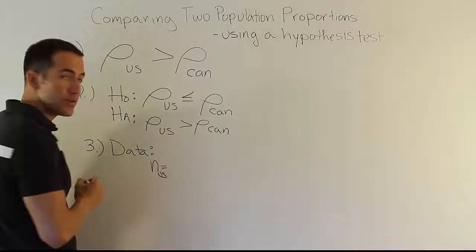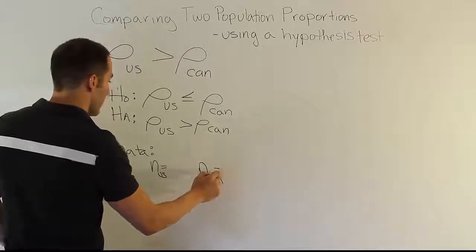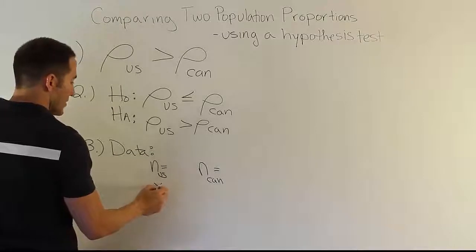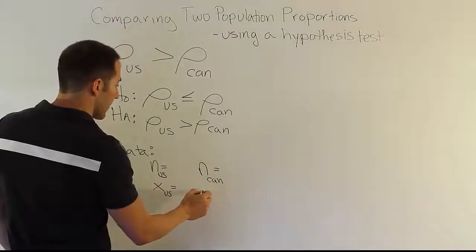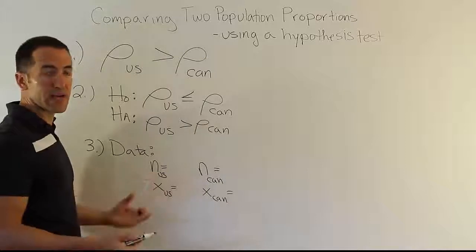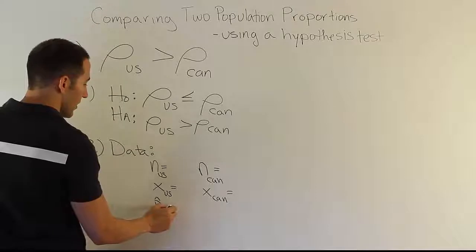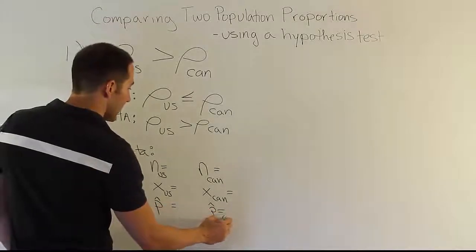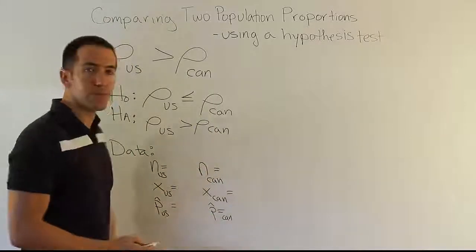We will have for each one, so we'll say a sample size for the US, a sample size derived from Canada. So we look at marriages in each country. Then we would have x, which is the number of marriages, let's say, that ended in divorce for the US out of that total. And then we'd have x for the Canadian sample. Again, would be the number of marriages that ended in divorce. And then, of course, from there we would calculate our p-hats for each group. The p-hat for Canada, and the p-hat for the US. Okay, so it's just an example of the kind of data we would collect.